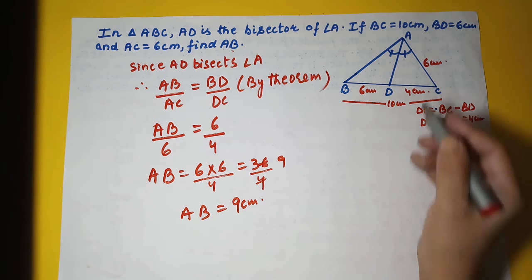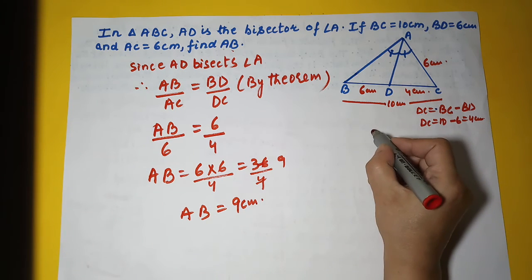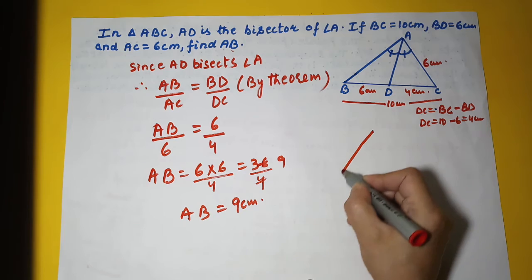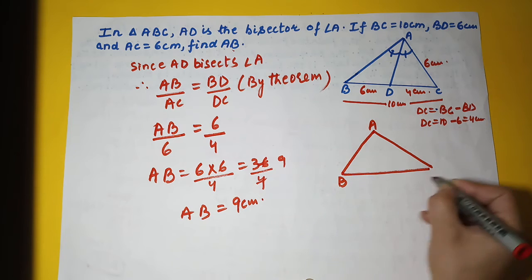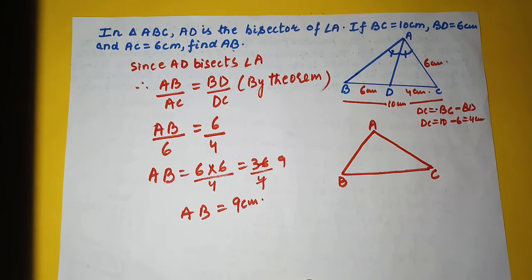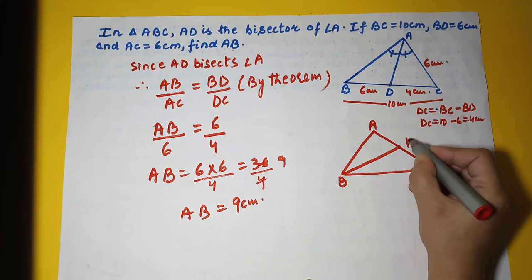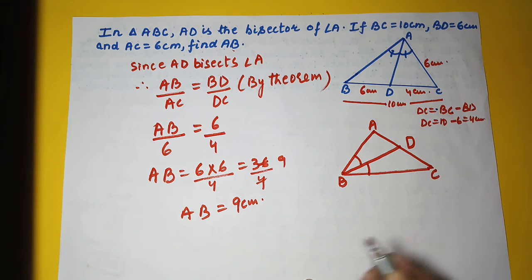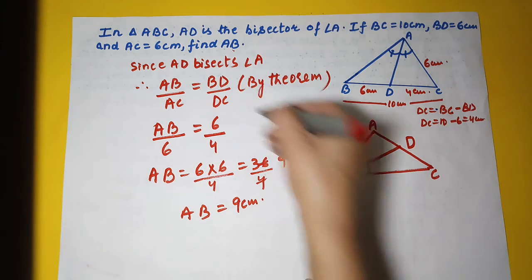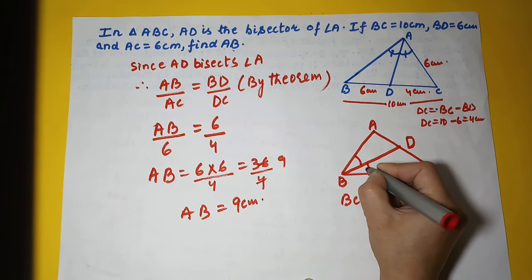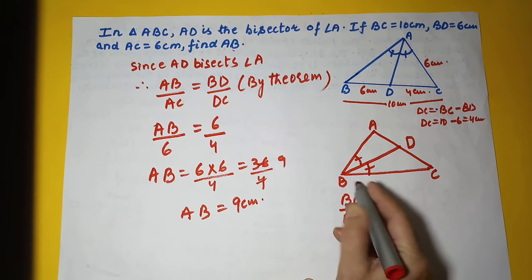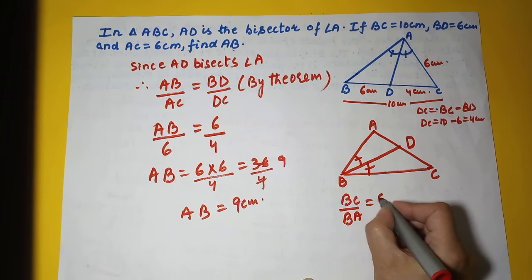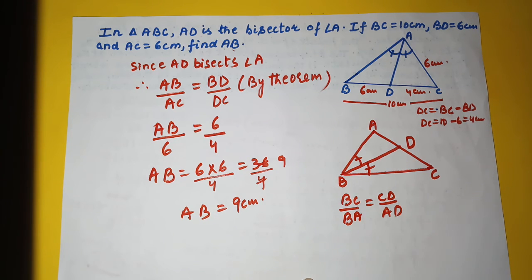So now let's understand this theorem properly. Suppose I have a situation like this in which this is A, this is B, and this is C. Now suppose I am saying that BD is bisecting this angle B. Then BC upon BA will be equal to CD upon AD.